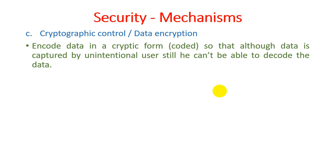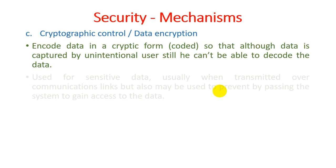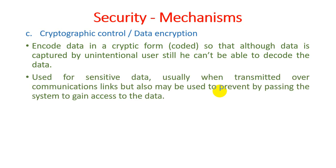Data encryption encodes data in a cryptic or coded form so that even if data is captured by an unintentional user, they cannot decode it. Even using the latest hacking tools, the hacker cannot read the encrypted information. Encryption is especially used for sensitive data, usually when transmitted over communication links, but also to prevent unauthorized system access from gaining useful information.